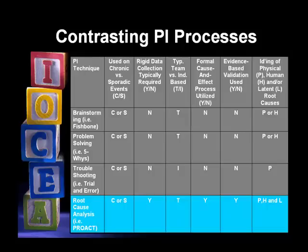This table contrasts brainstorming versus problem solving, troubleshooting, and RCA. If you're doing true RCA, it will apply to chronic or sporadic events. It will always require rigid data collection, an unbiased team with varied backgrounds, a formal cause and effect process to find those linkages — like rolling a videotape backwards — and an evidence-based validation process where we drill down until we understand the basis of poor decision-making. When we have all those elements, we are doing root cause analysis.